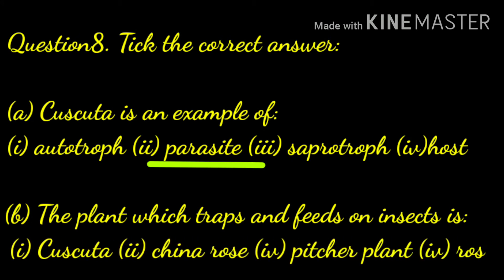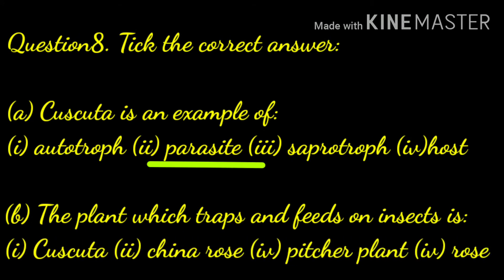Question number eight: choose the correct option. First, Cuscuta is an example of — autotroph, parasite, saprotroph, or host — answer: parasite. Second, the plant which traps and feeds on insects is — Cuscuta, China rose, pitcher plant, or rose — answer: pitcher plant.